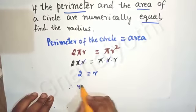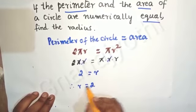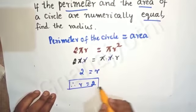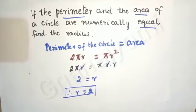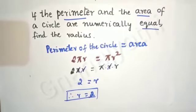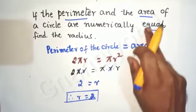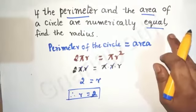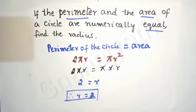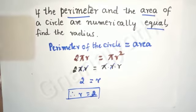Therefore, r, which stands for radius, is equal to 2 — which means r = 2 centimeters. By using the perimeter formula and the area formula and setting them numerically equal, we found the radius.